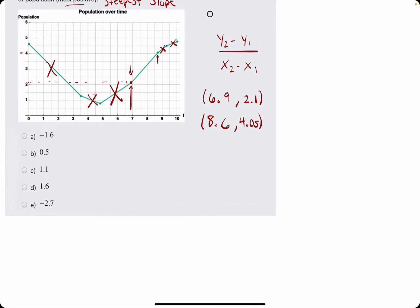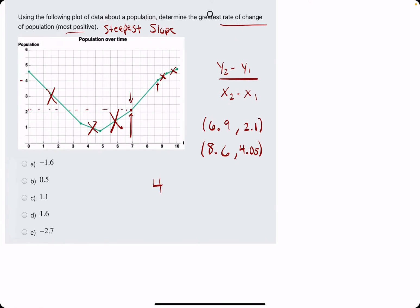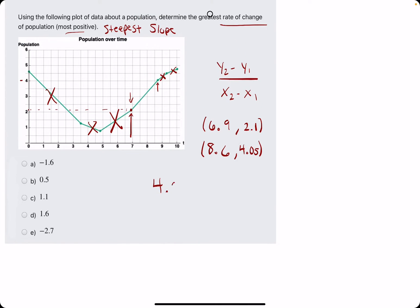Okay. So now, we're plugging these values into the slope formula. 4.05 minus 2.1, all divided by 8.6 minus 6.9.